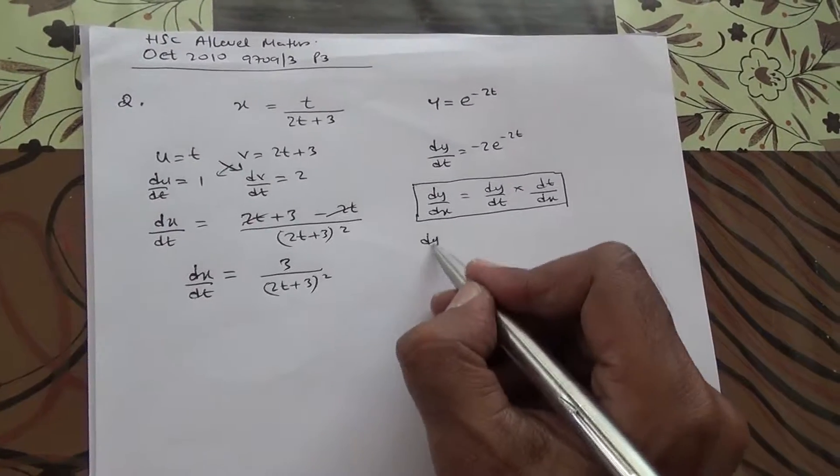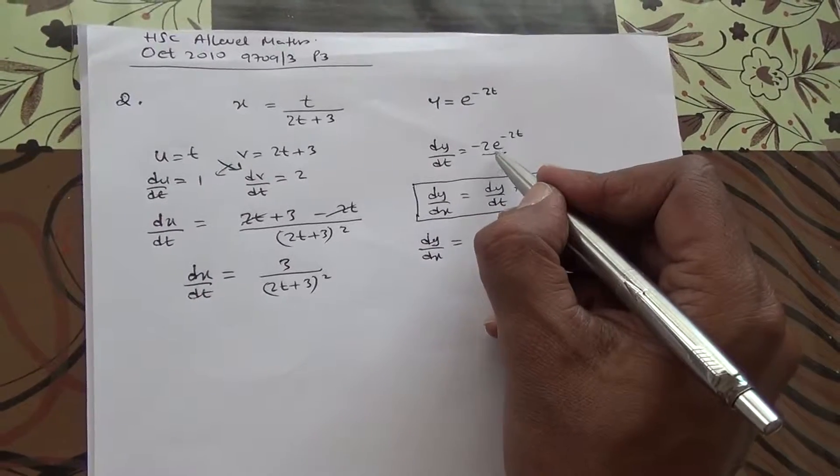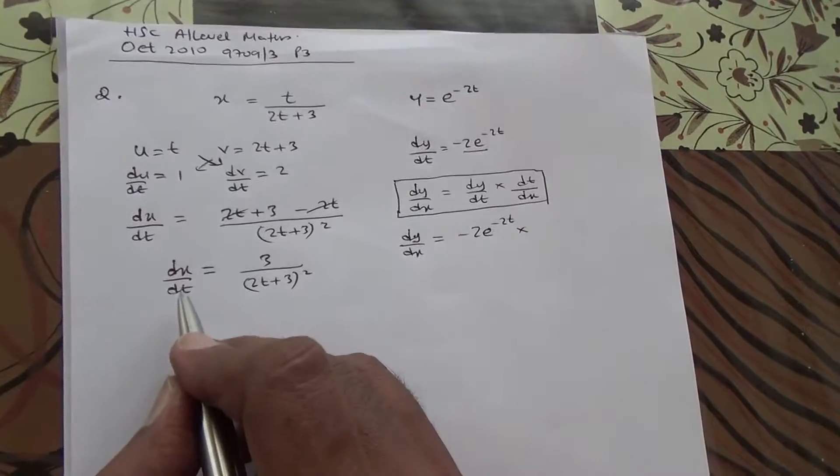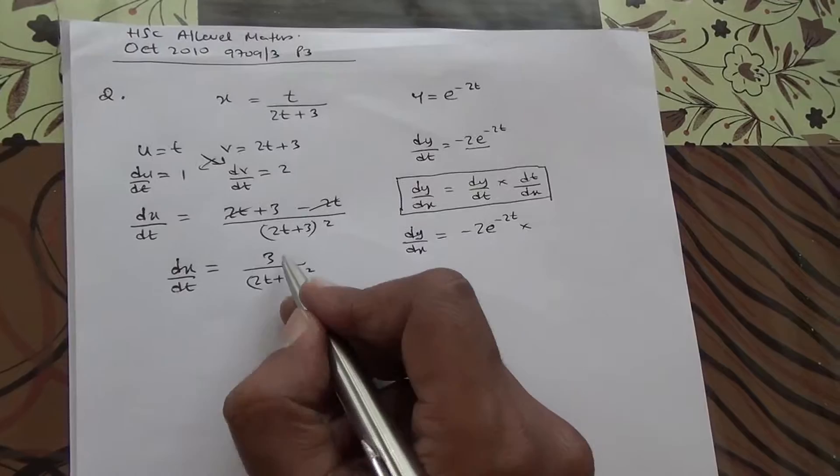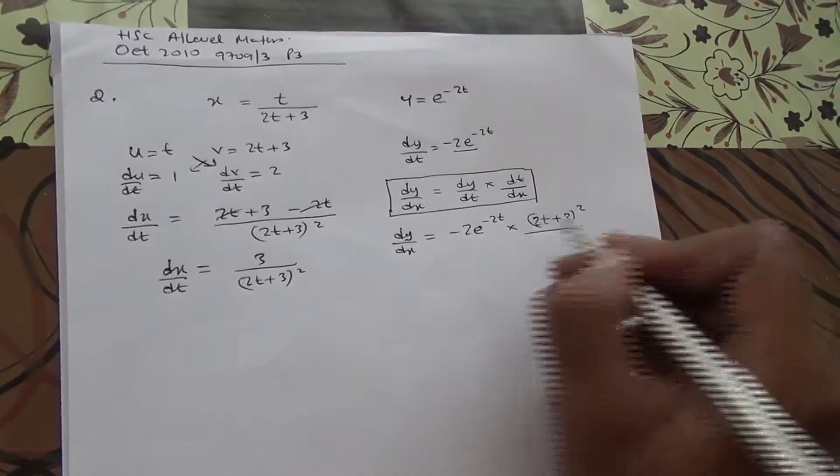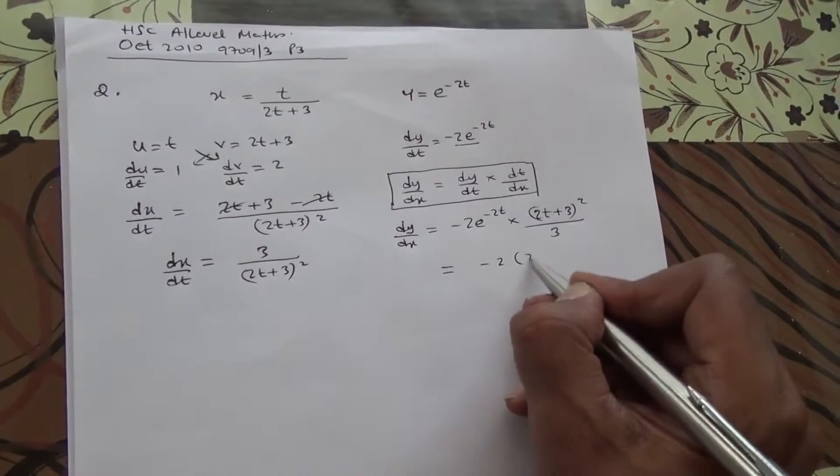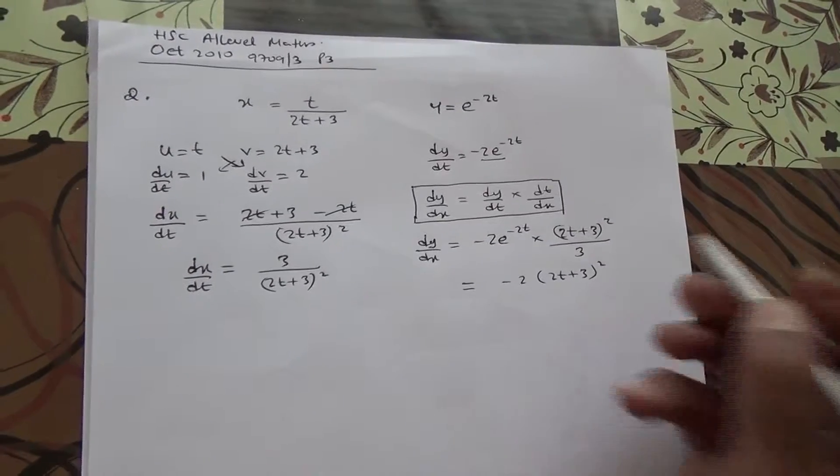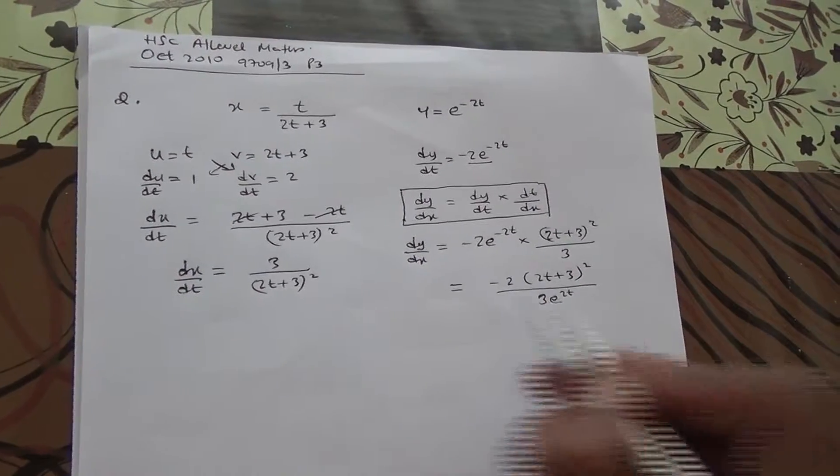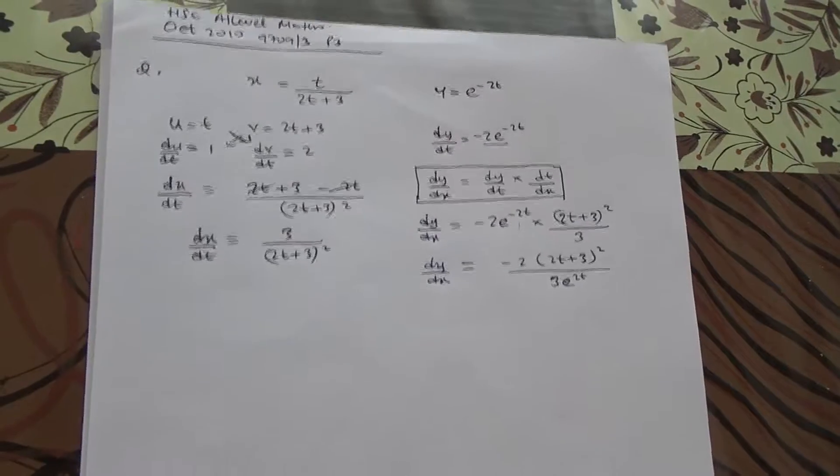Therefore, so let's do dy by dx. dy by dt is here, minus 2e to the minus 2t times dt over dx. We have dx over dt, therefore dt over dx is going to be the inverse of that, so we're going to put 2t plus 3 to the square on top, and this one goes to the bottom. So, in other words, we're saying minus 2 times 2t plus 3 to the square, divided by 3e to the 2t. So, this comes down here, the law of indices. I'm sure you should be on top of it right now. So this is dy by dx.